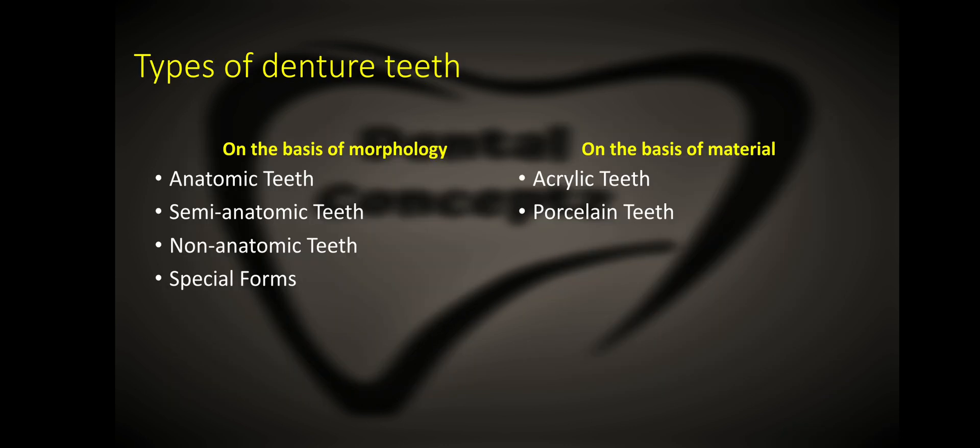What are the different types of denture teeth available? Denture teeth can be classified on the basis of morphology as anatomic teeth, semi-anatomic teeth, non-anatomic teeth, and special forms. On the basis of material, we have acrylic teeth, porcelain teeth, and composite teeth.